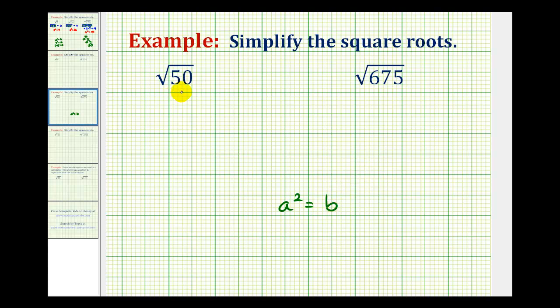But notice in this case there's not a number times itself that's equal to 50. But a square root is not considered simplified if it contains perfect square factors. So we do want to simplify this by identifying the perfect square factors.